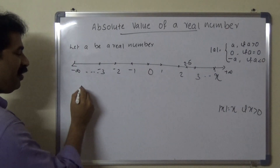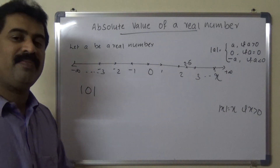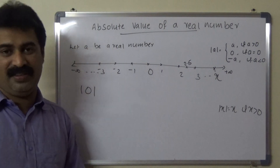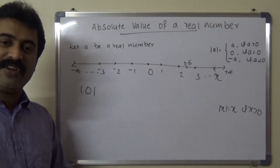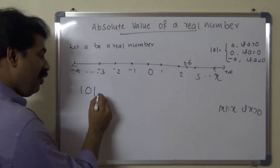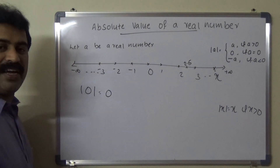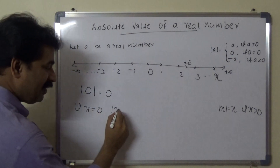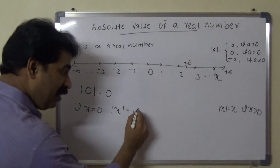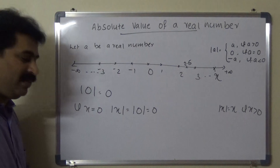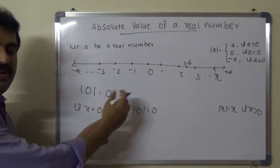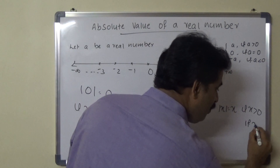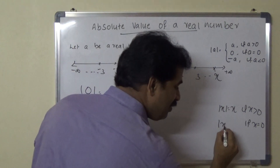What is the absolute value of 0? The absolute value of 0 means the distance between 0 and 0, which is the distance between the origin and itself. So the distance is 0, meaning absolute value of 0 equals 0. Therefore, if x equals 0, then modulus x equals 0.